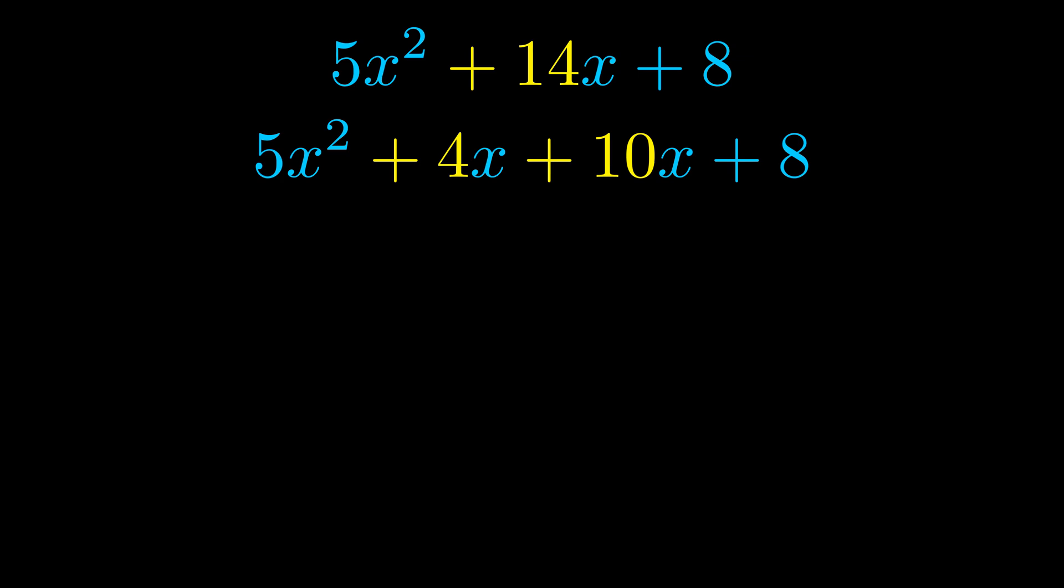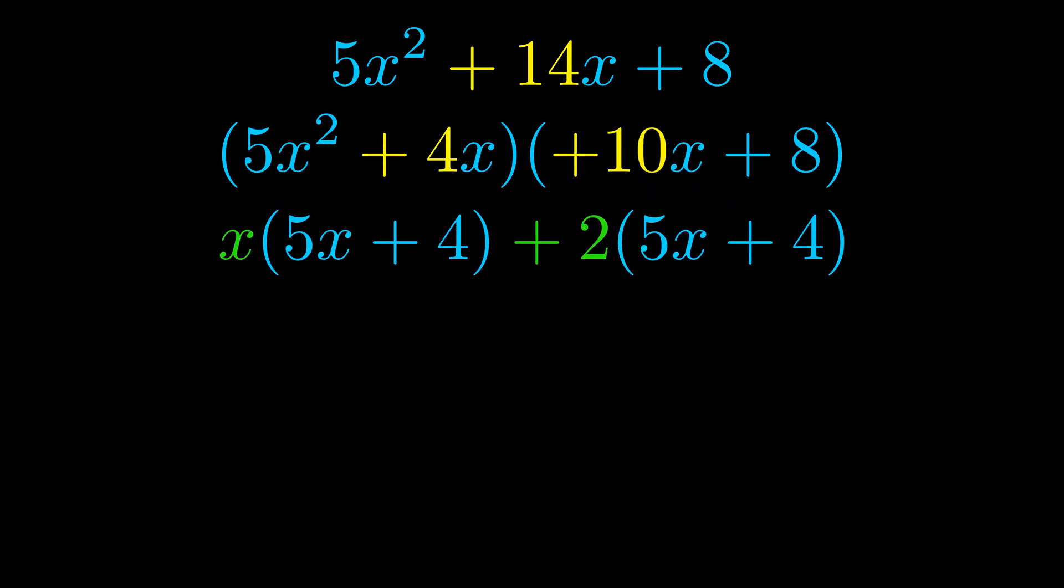Once we've done this we go ahead and we put parentheses around the first term and the last term. And we do that so that we can take the greatest common factor out of both terms. We can see the greatest common factor is now outside in green.